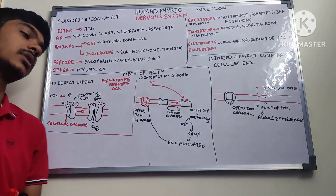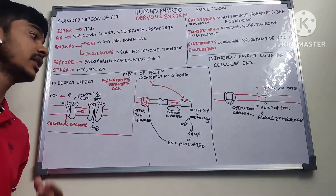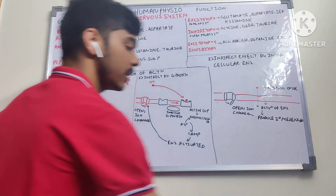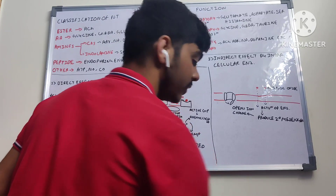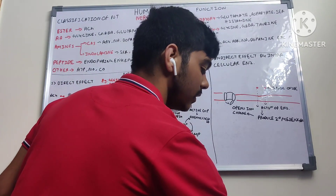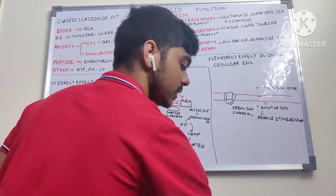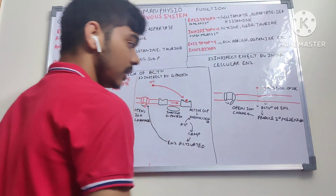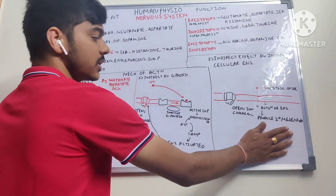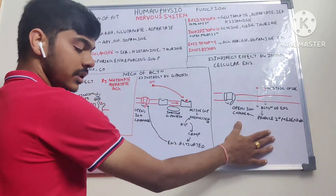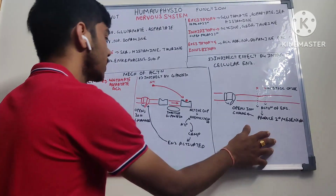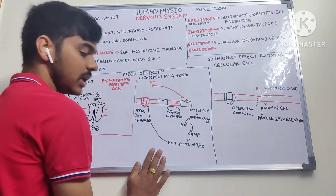The third mechanism is indirect via intracellular enzymes. Nitric oxide is the example here — it enters the cell directly by diffusion because it is a gas, activates an enzyme which produces a secondary messenger, and this opens the ion-gated channel. Carbon monoxide also acts by this mechanism.